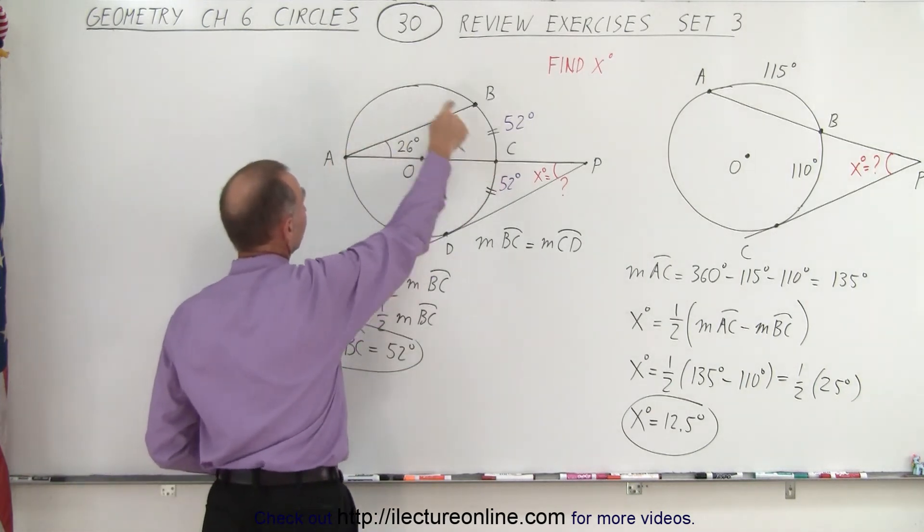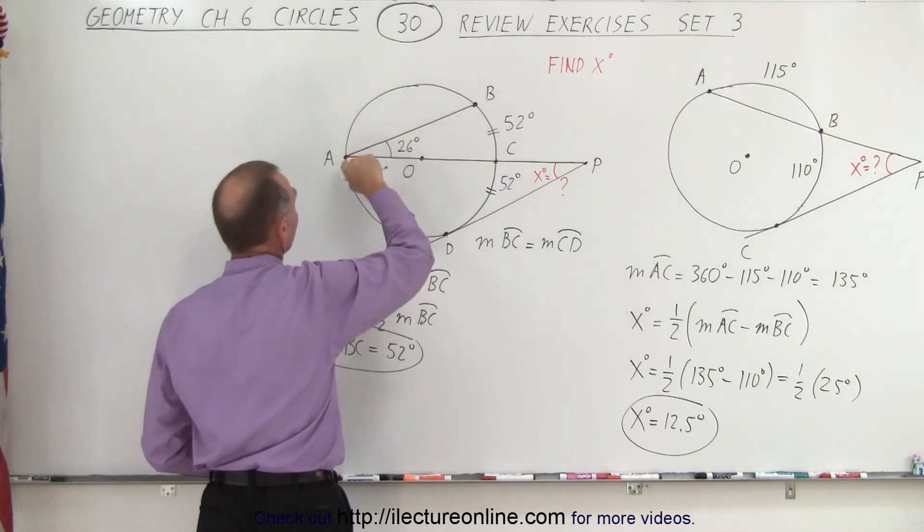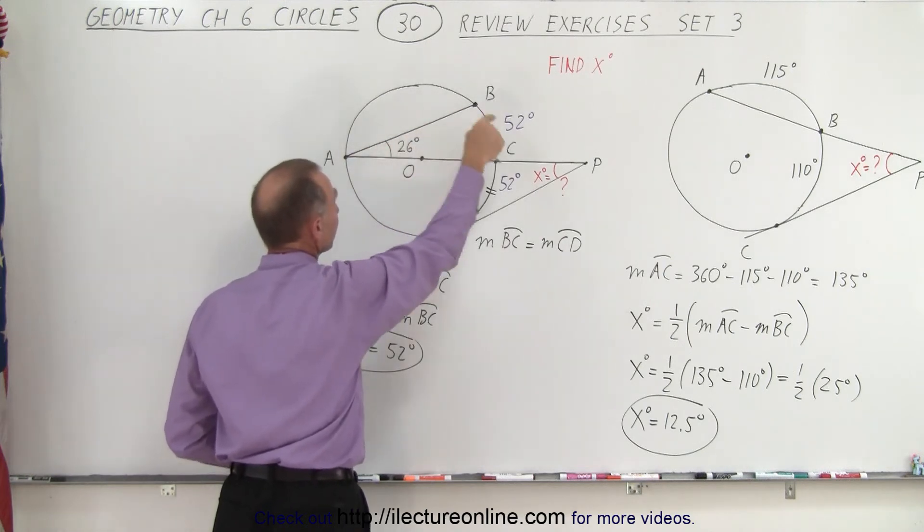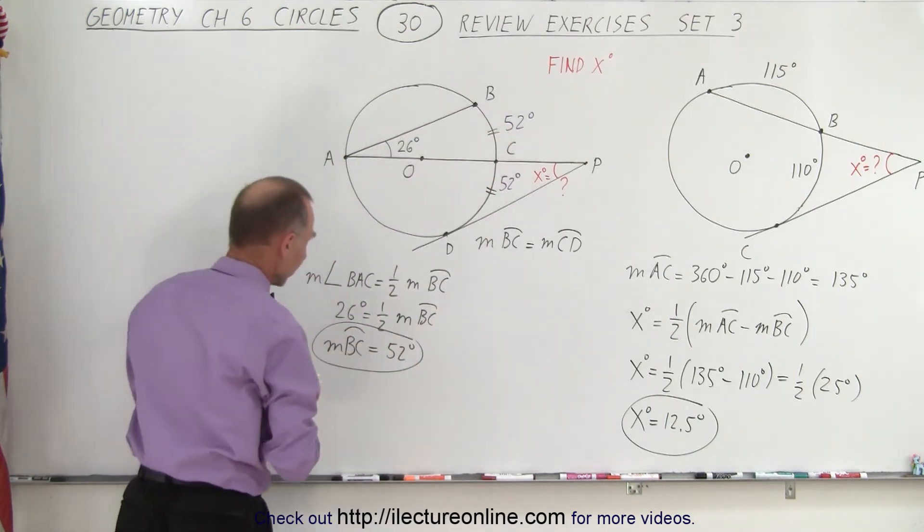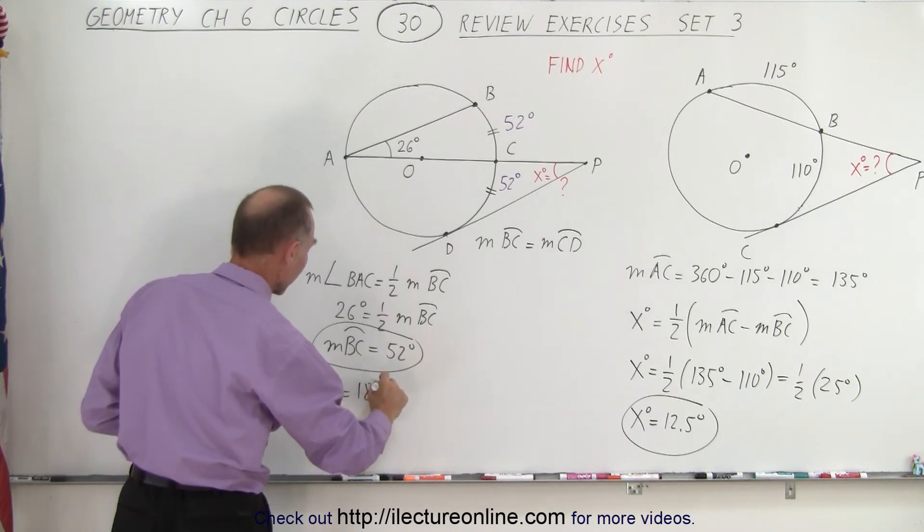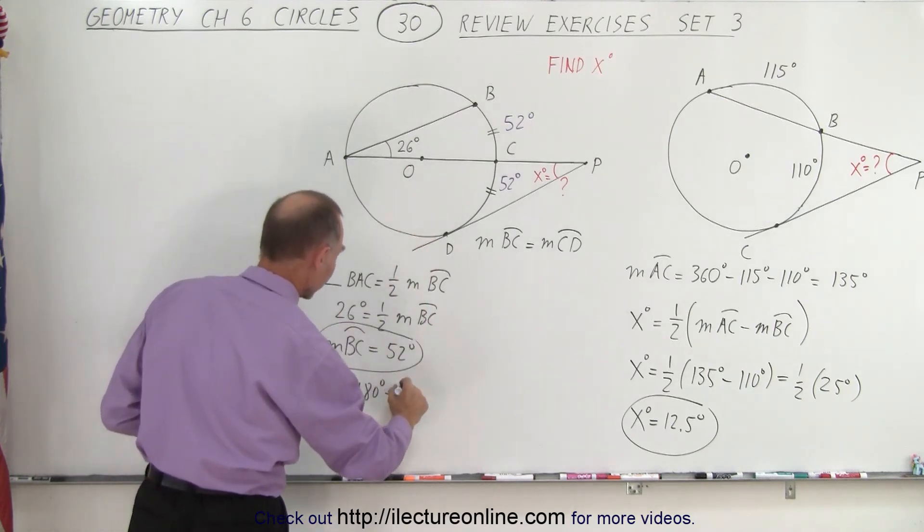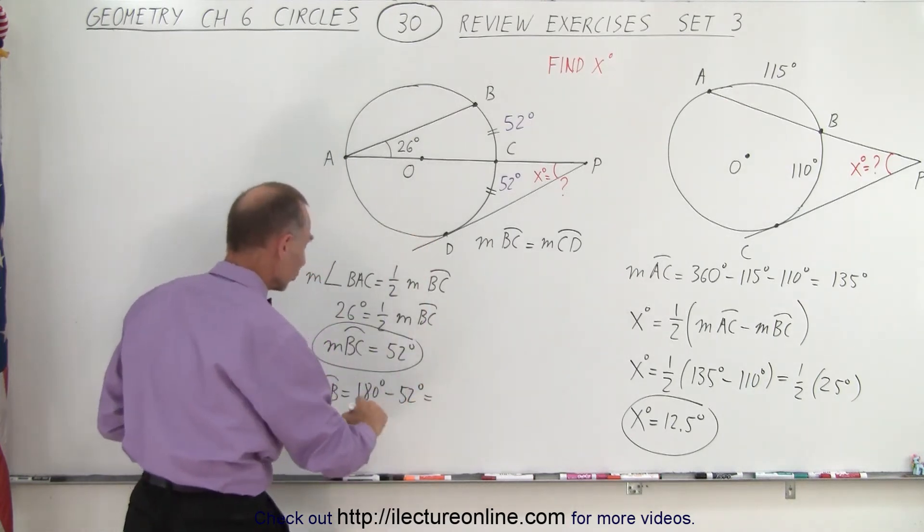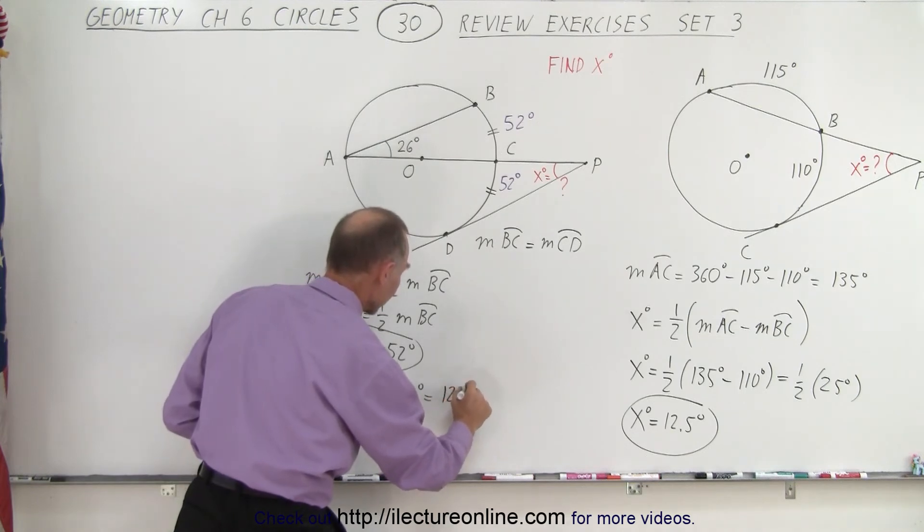So we can say that the measure from A to B must equal 180 degrees minus the 52 degrees, which is equal to 128 degrees. And of course, if that's true, then the measure from A to D must also be 128 degrees.